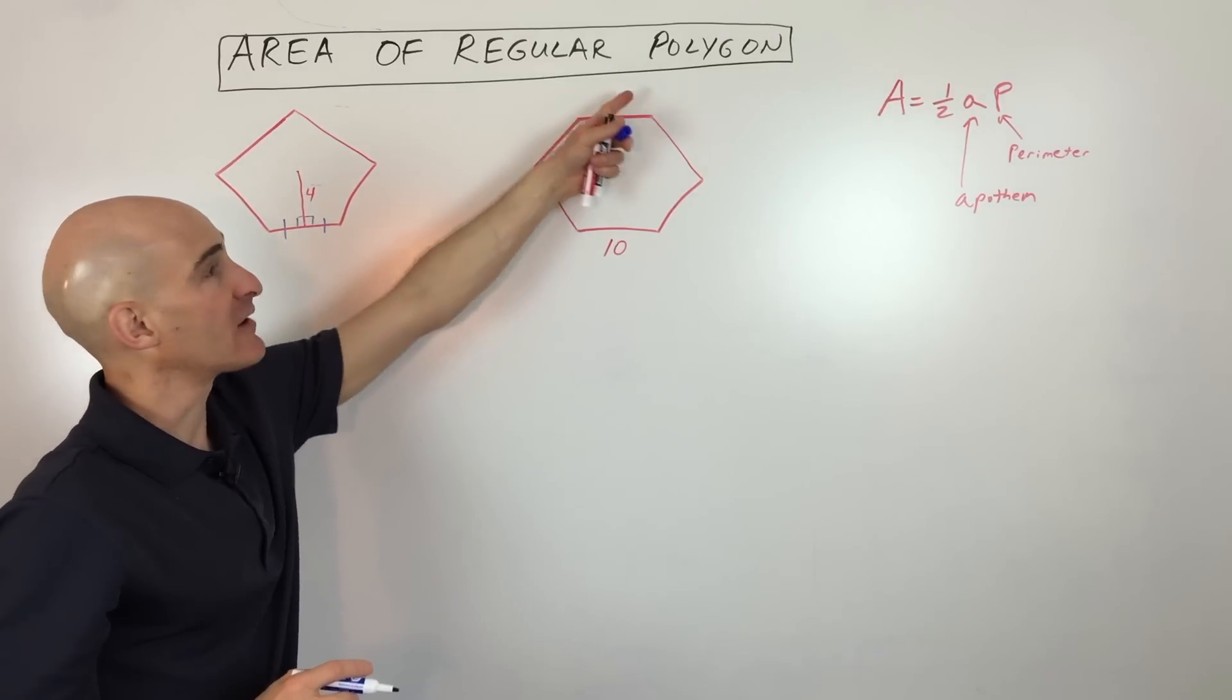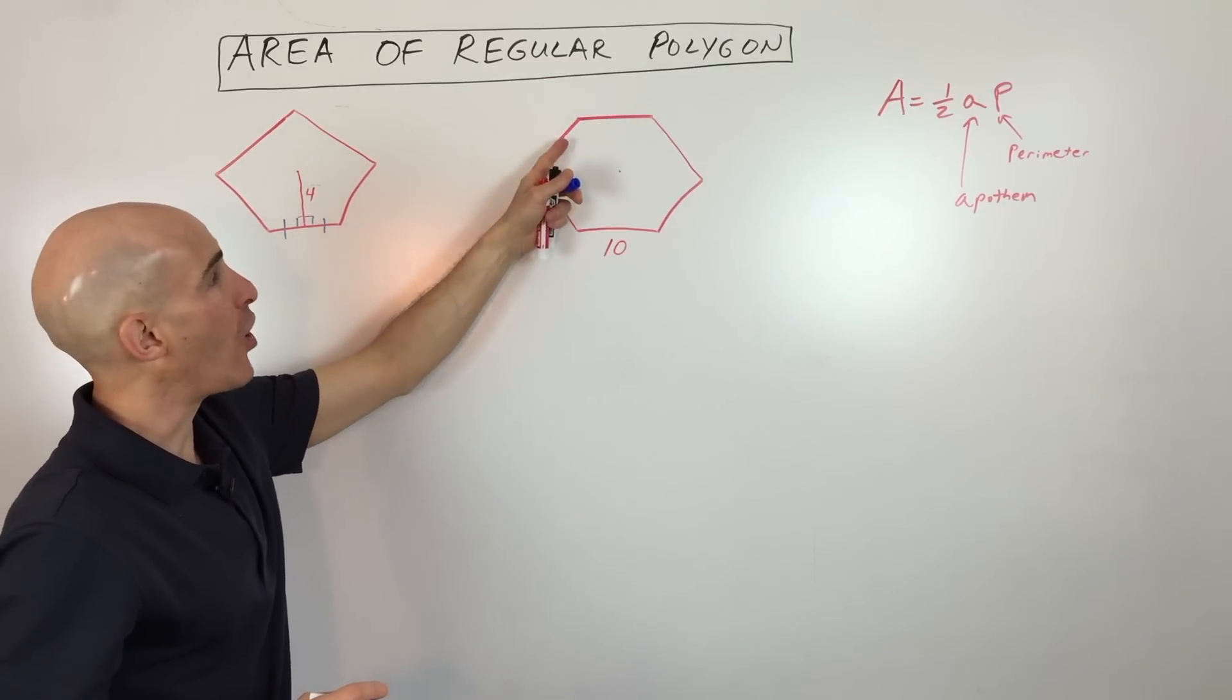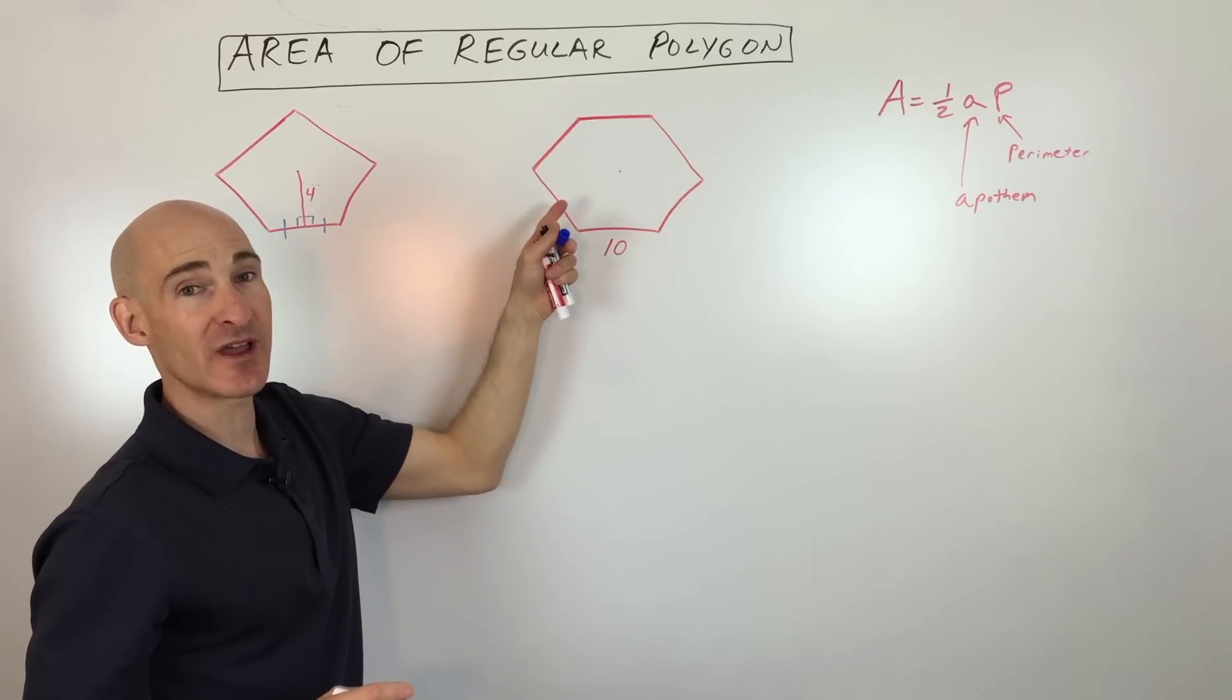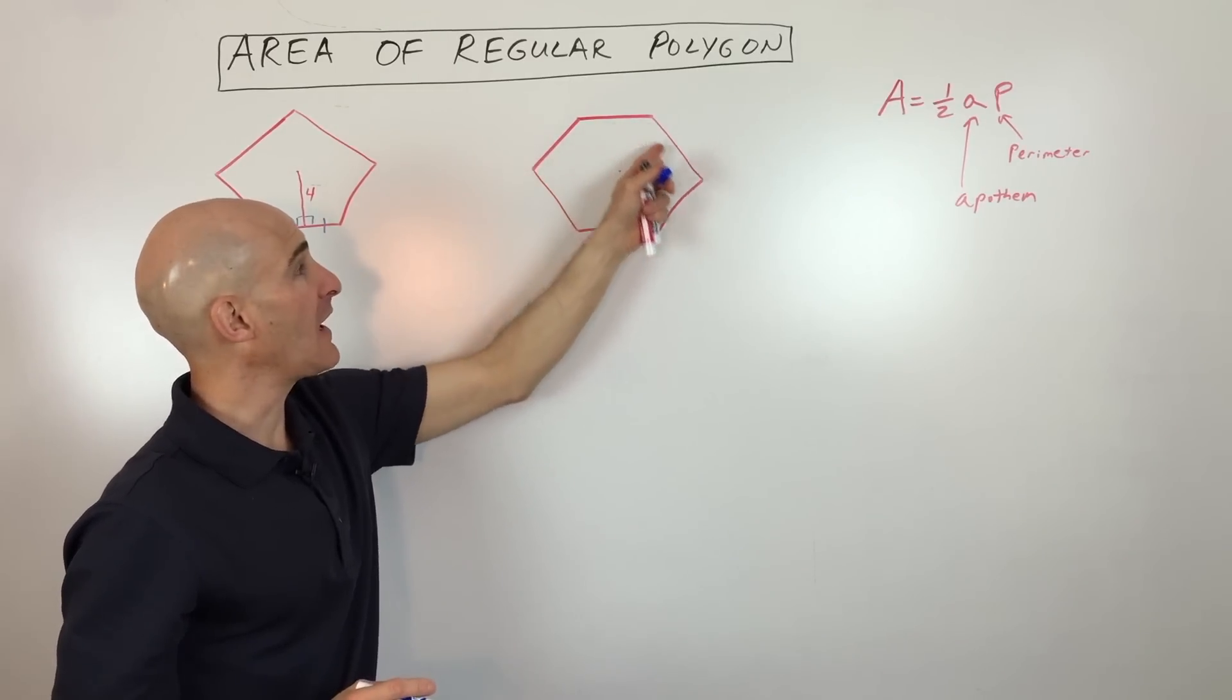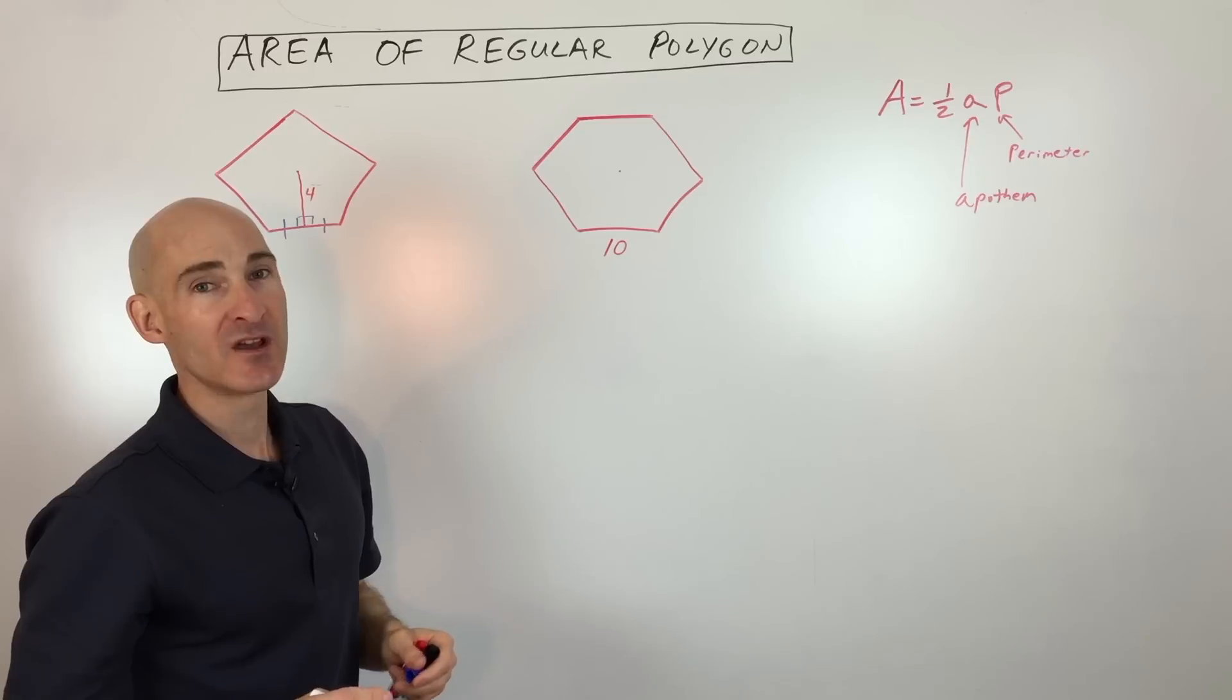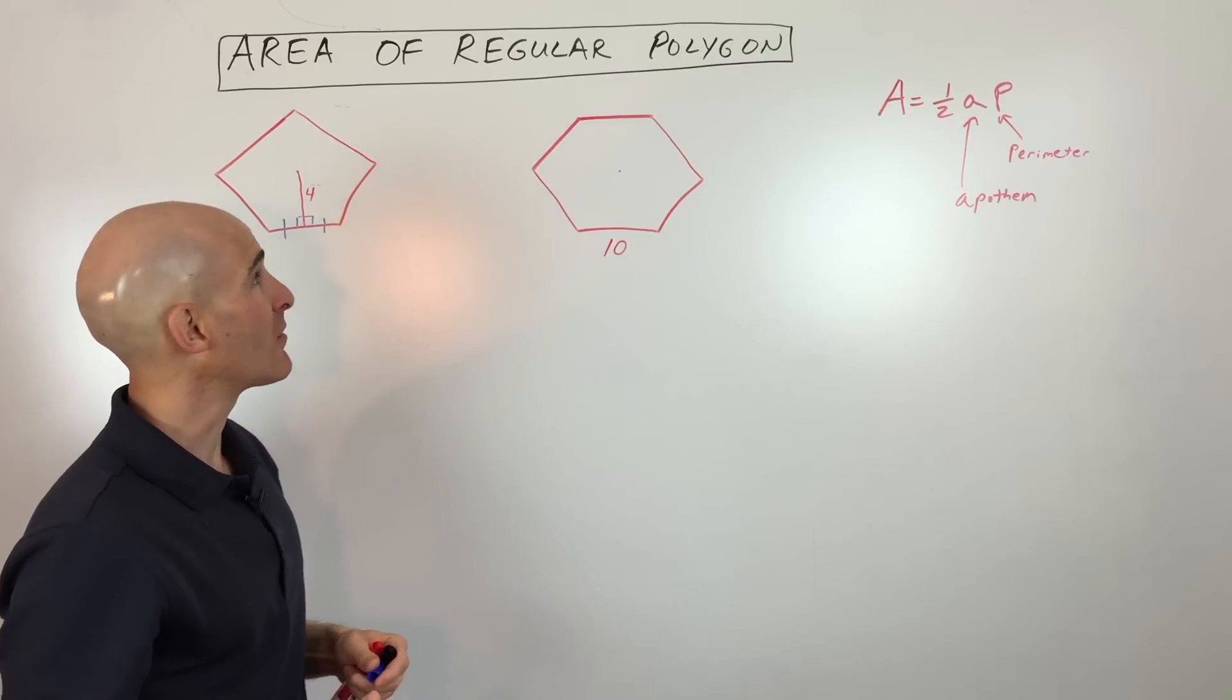Now, what's a regular polygon? Well, regular just means that all the sides are going to be the same length. They're congruent, and all the angles are also going to be congruent. So that's what they talk about when they talk about a regular polygon.